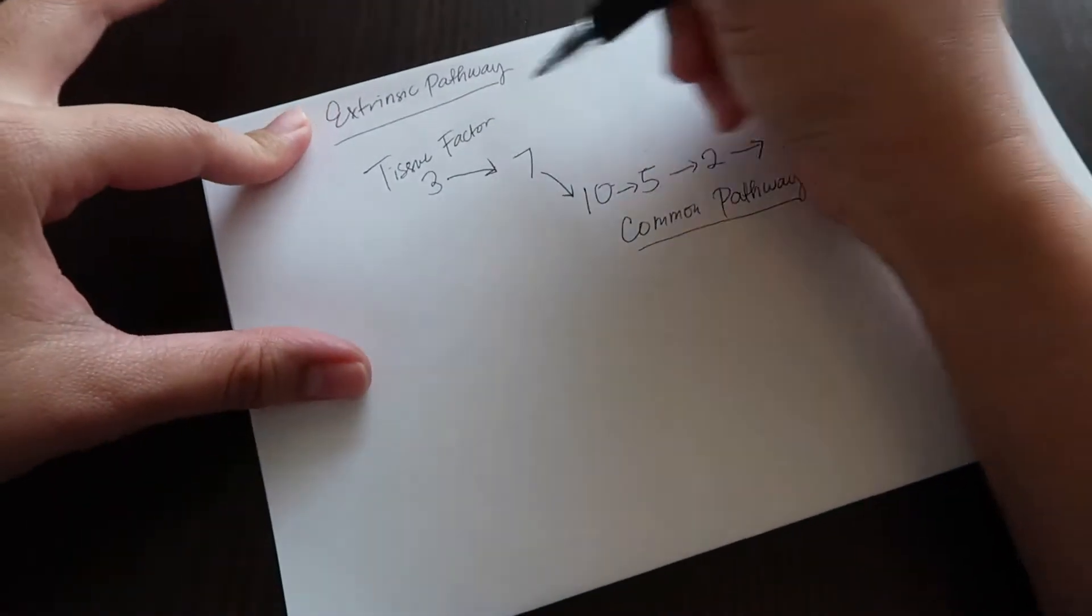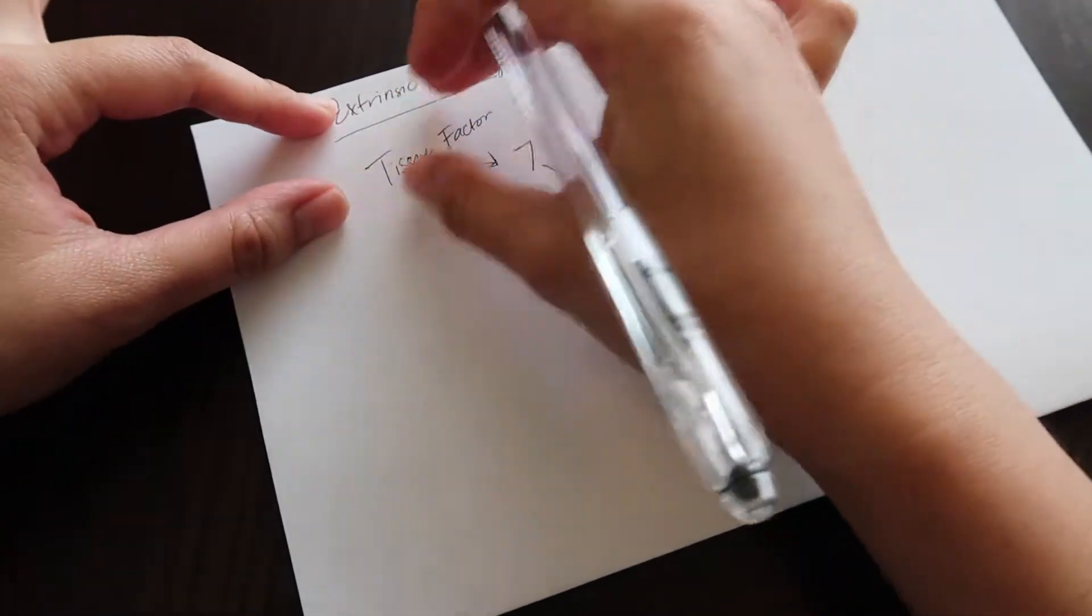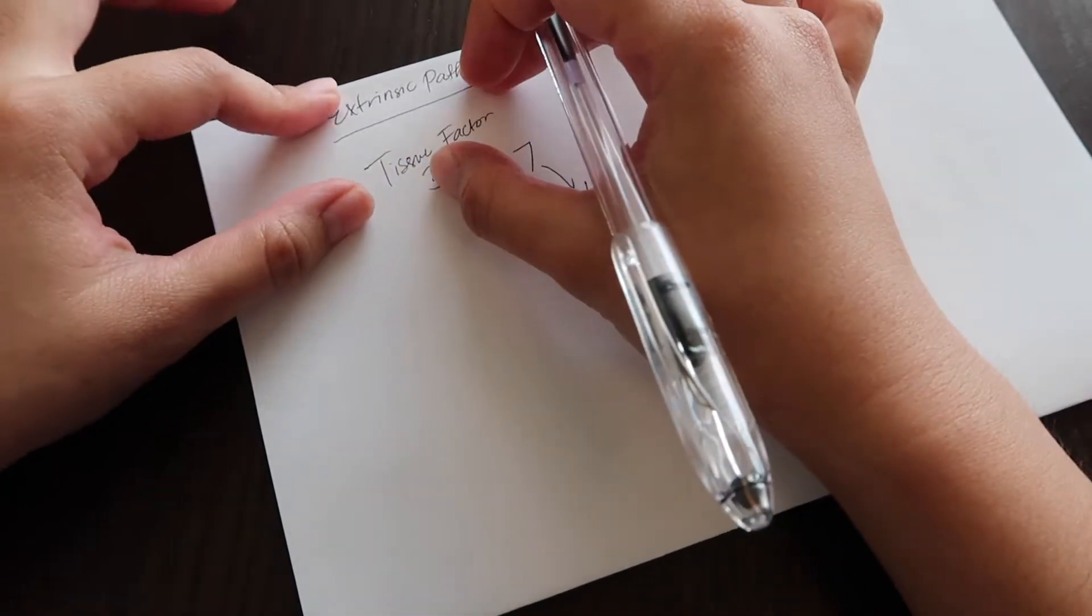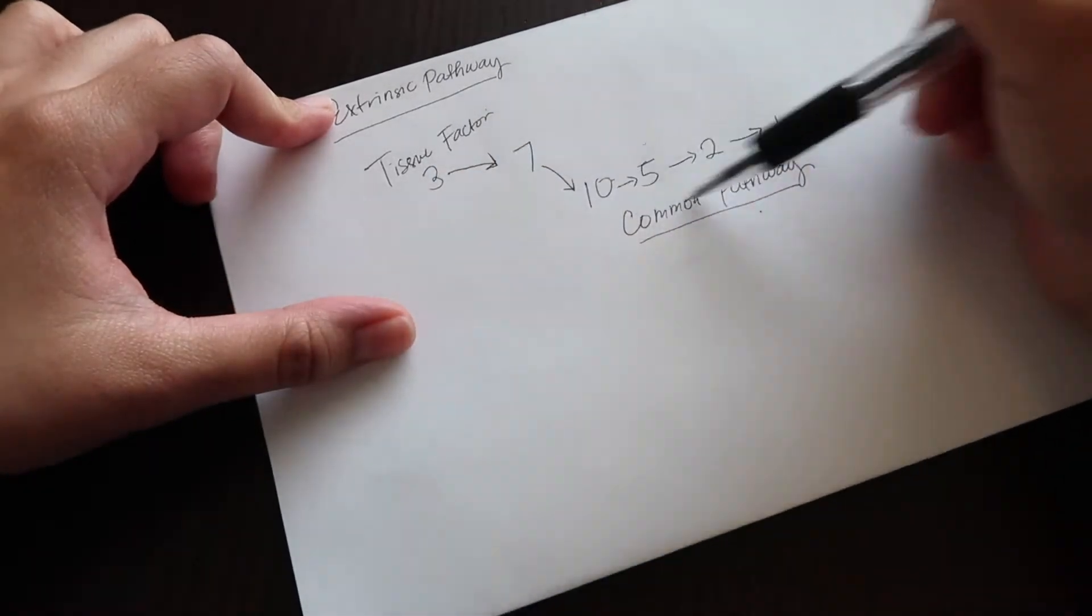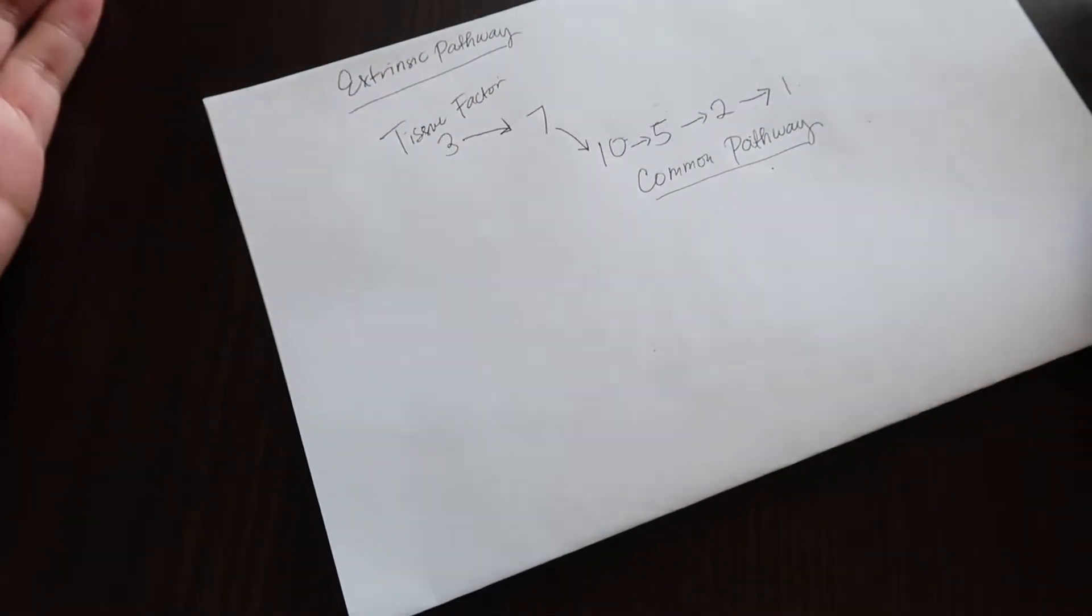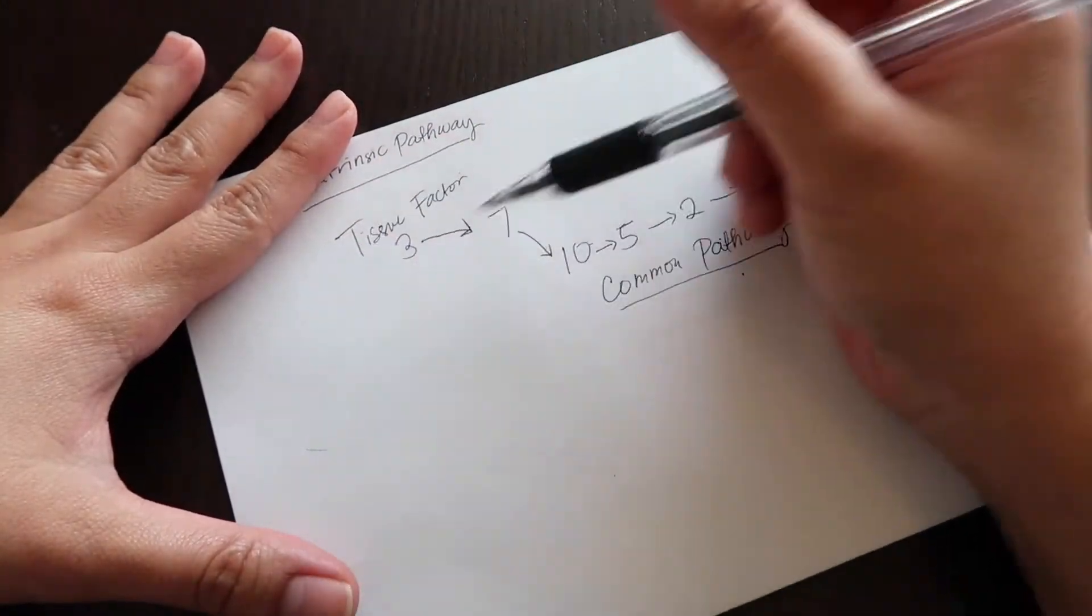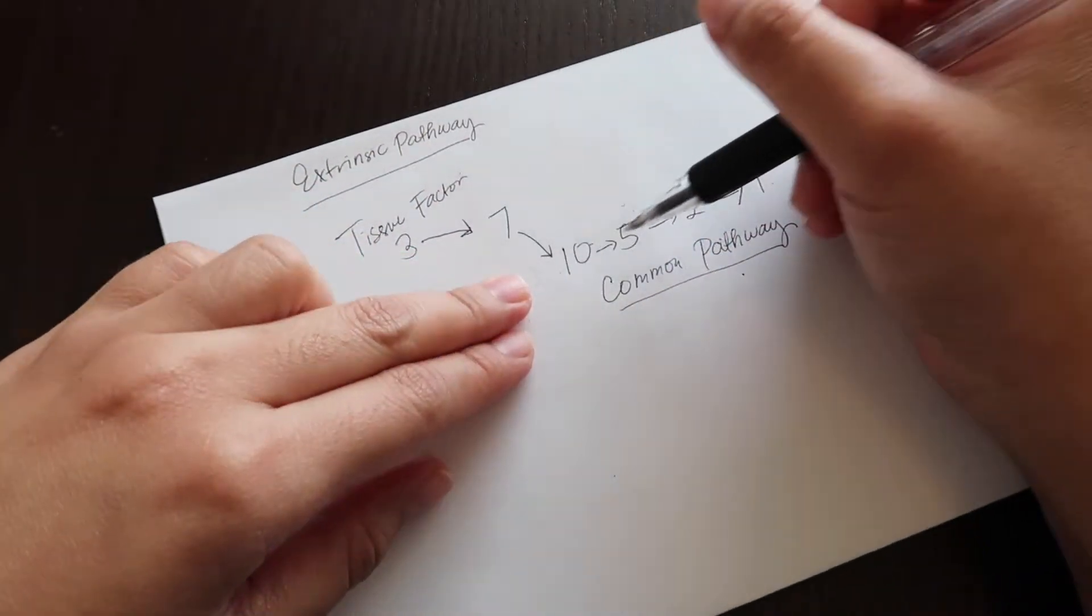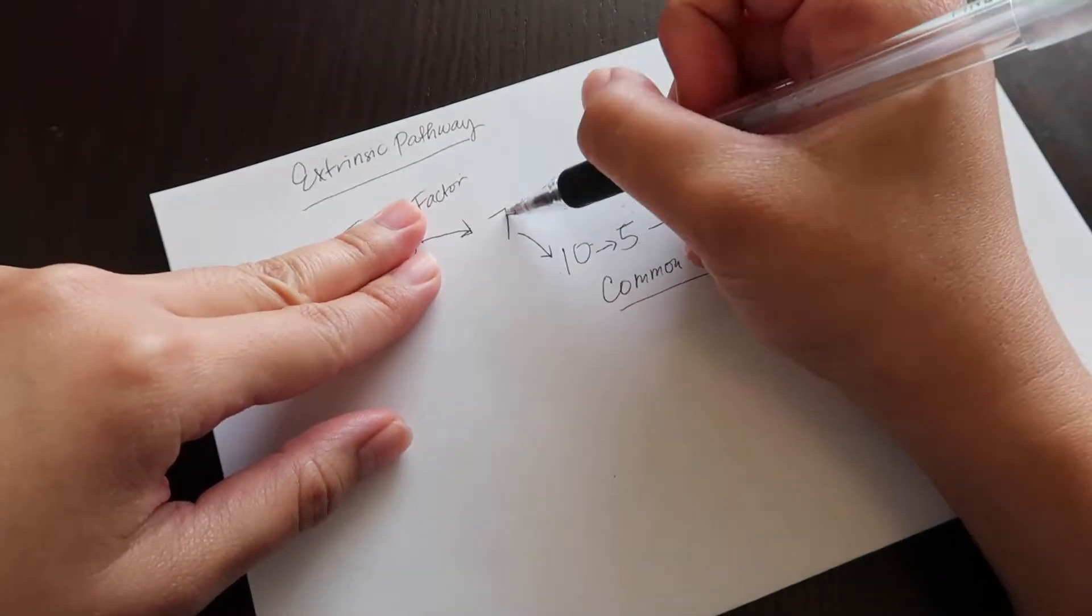It affects the common pathway. If there's anything wrong with extrinsic pathway, it will affect the common pathway as well because they're all connected. Now let's go to the other side, which is the intrinsic pathway. The intrinsic pathway has a lot more factors to it than the extrinsic. The easier way to memorize this is, you wrote 10, 5, 2, 1 already, and then you wrote 7 for the extrinsic pathway.